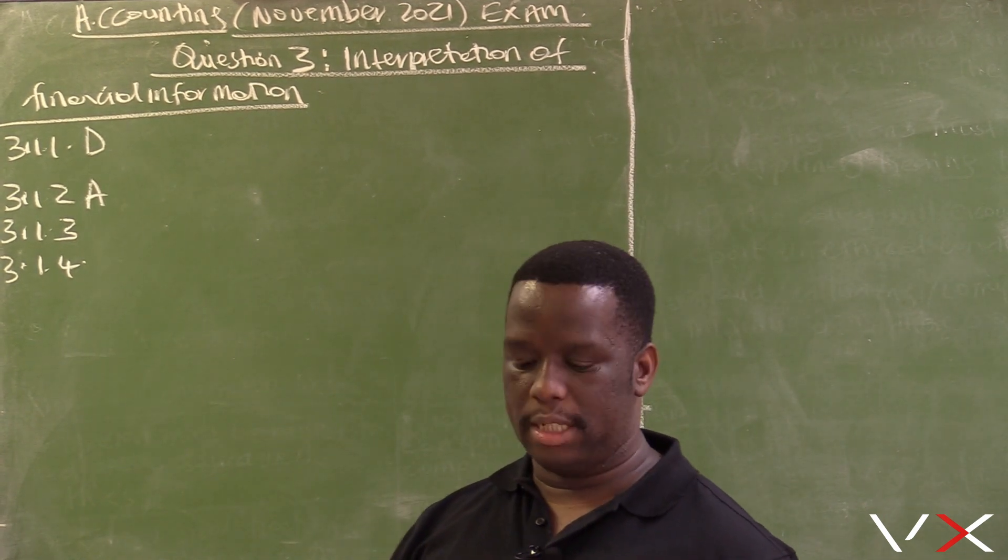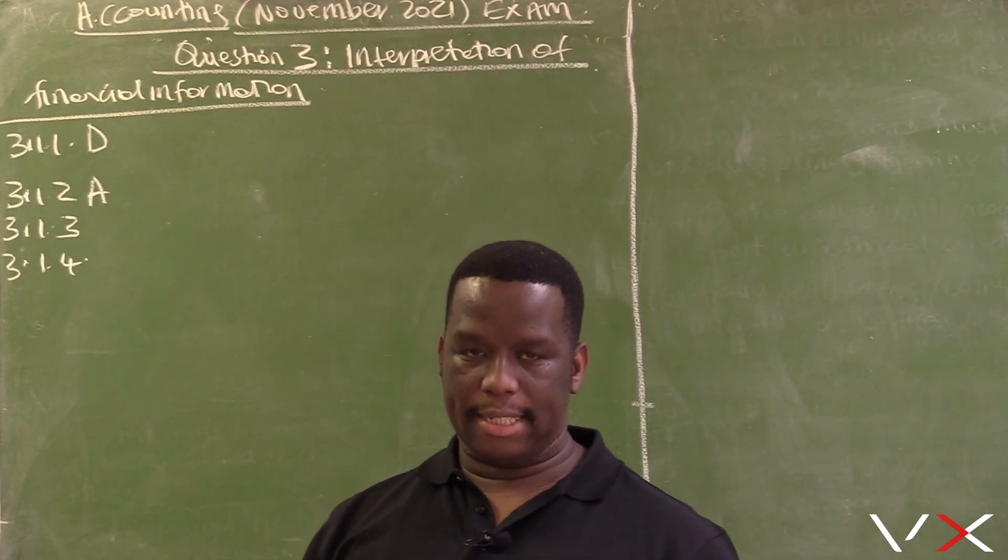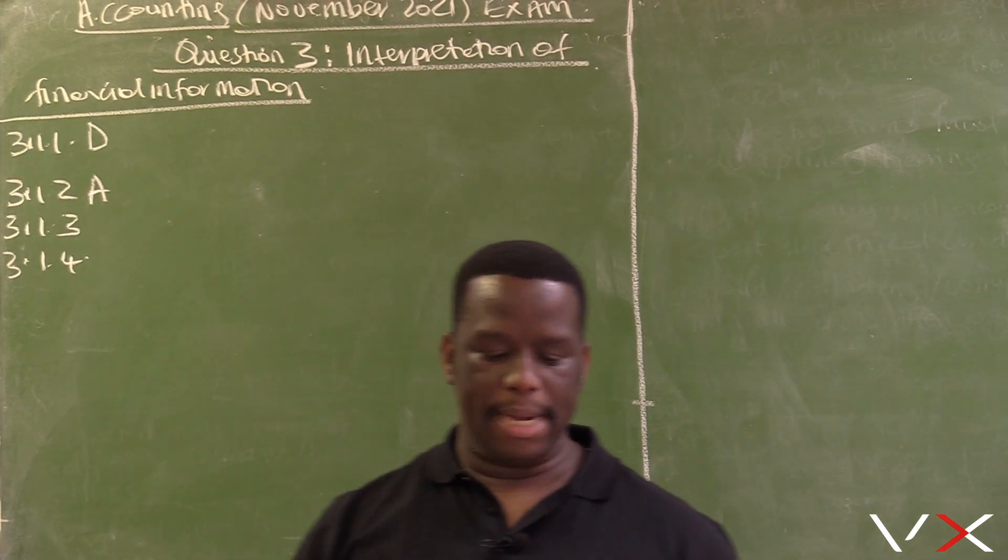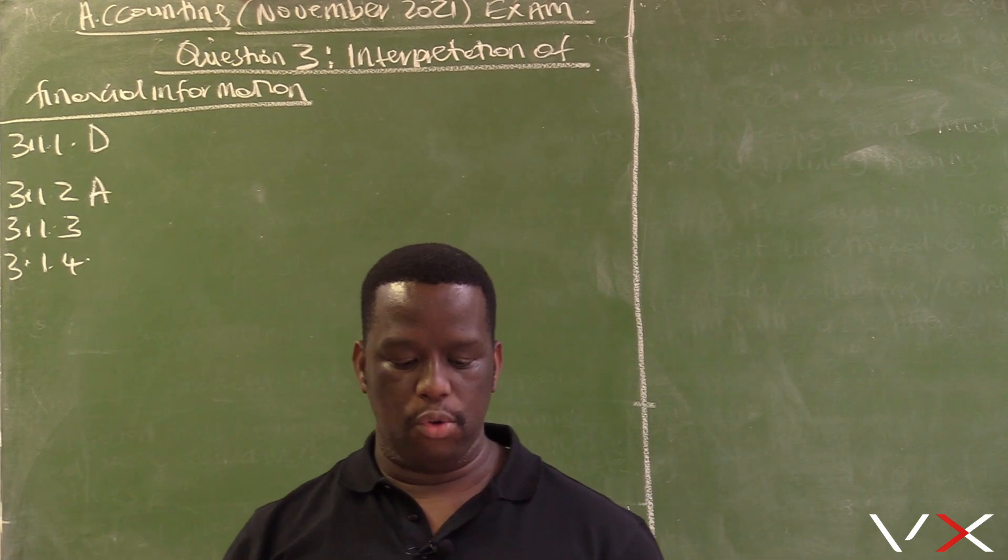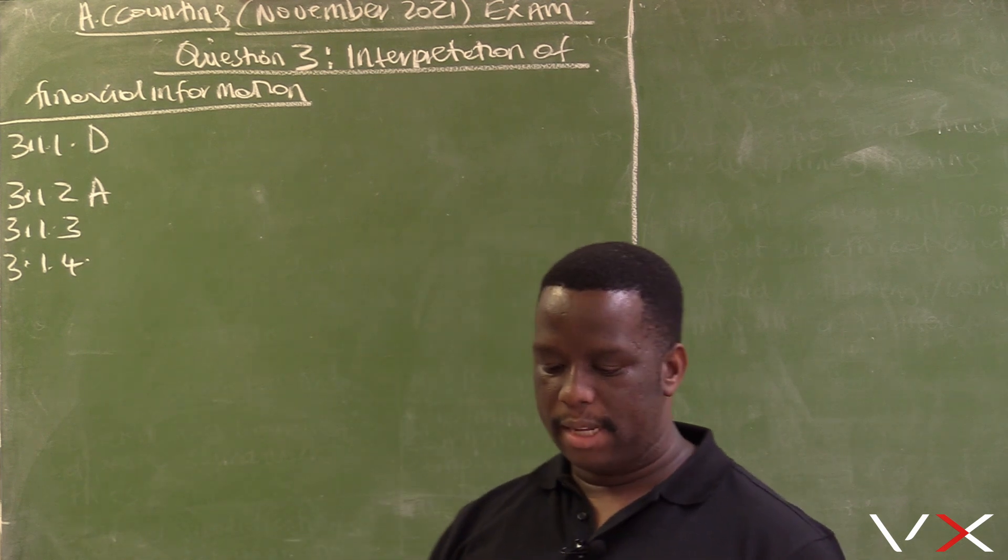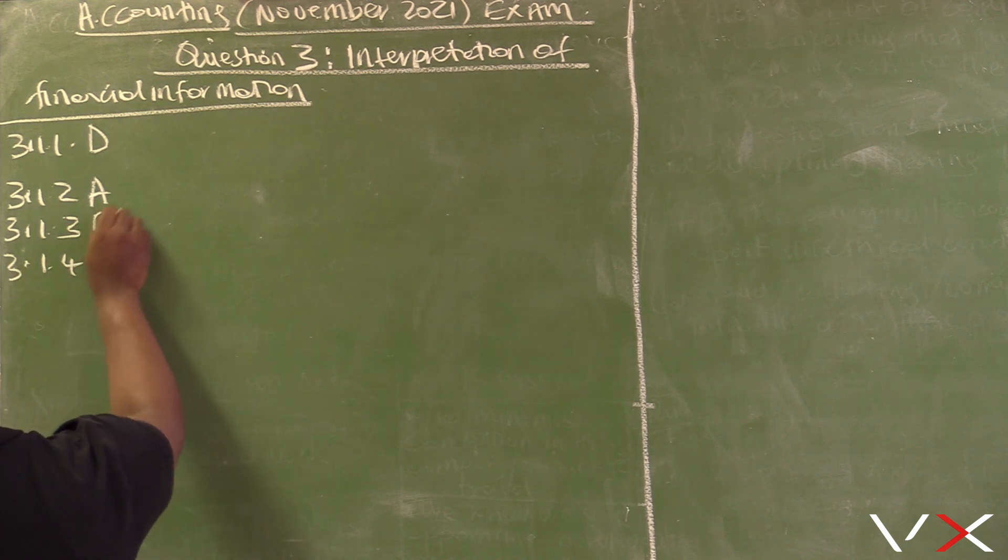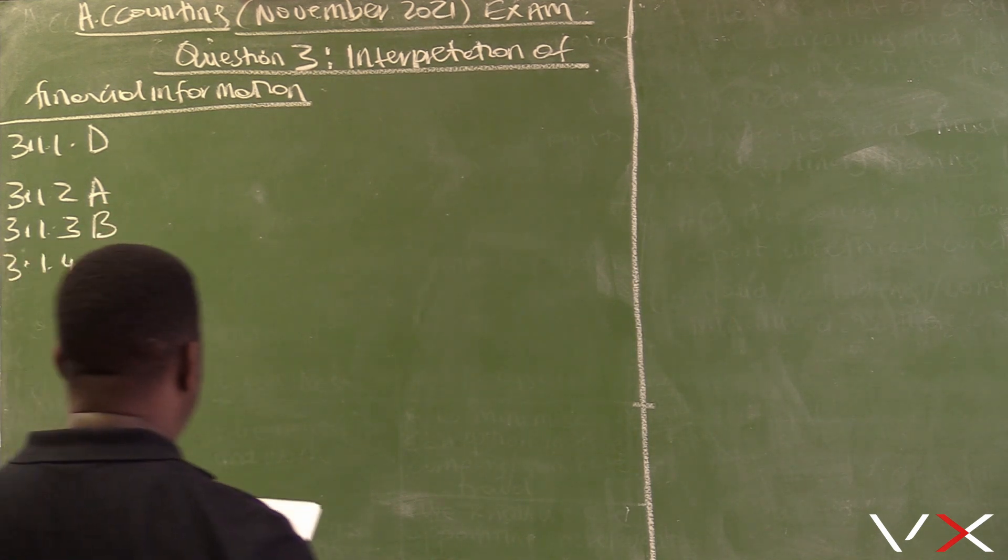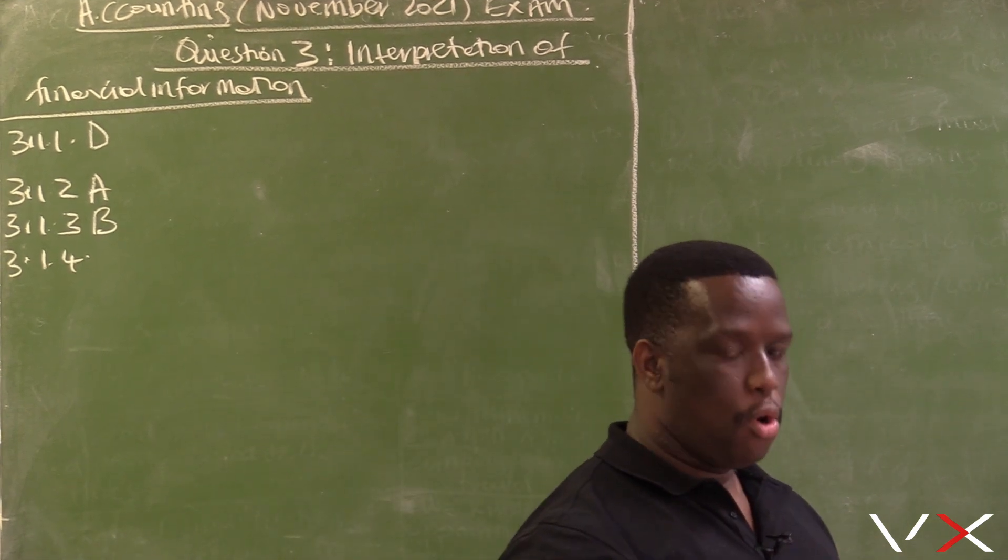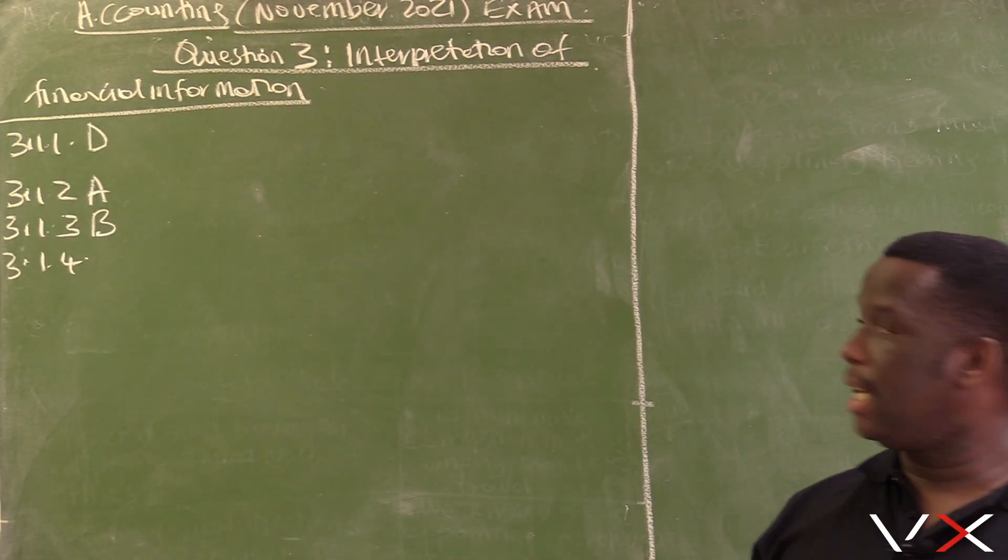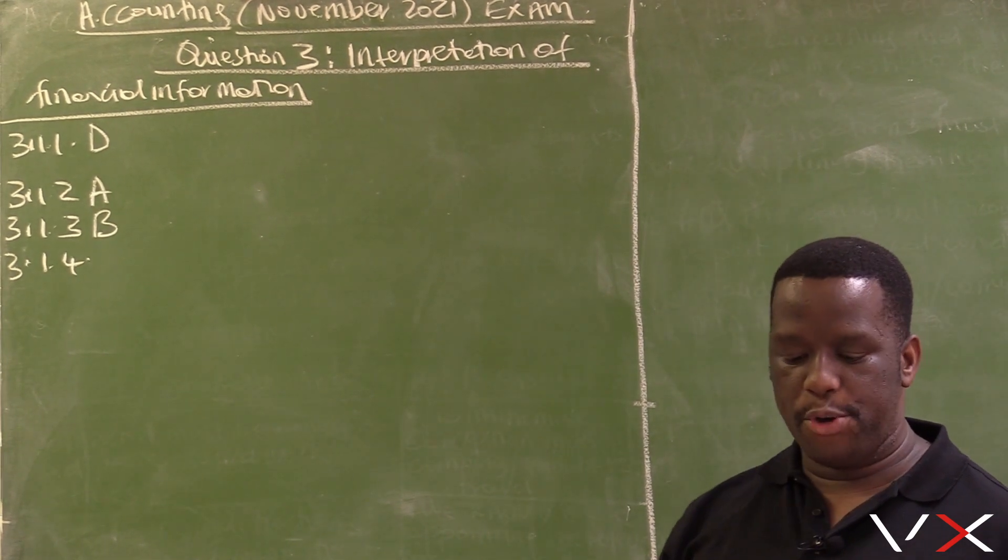3.1.3, the extent to which a company is financed on borrowed capital or loans, that is gearing. That is option B. The extent to which a company is financed on borrowed capital or loans, that is gearing, which is option B.